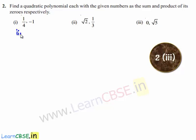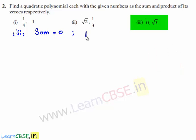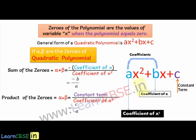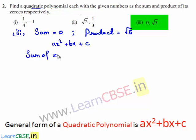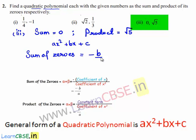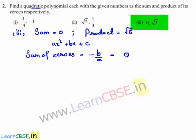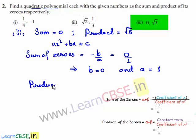Coming to the third part, the sum of the zeros given is 0 and the product of the zeros is equal to √5. Let us assume the required quadratic polynomial to be ax² + bx + c. We know that the sum of zeros is equal to -b/a, and the given sum is 0, which can be written as 0/1. So b = 0 and a = 1. The product of zeros is equal to c/a, and the given product is √5.